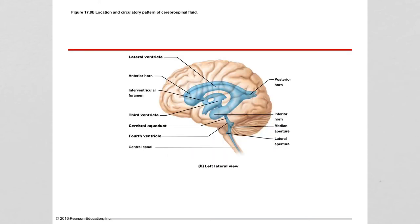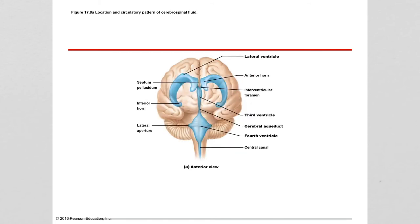Here is a different view of all the ventricles. We have the lateral ventricles, the third ventricle, the cerebral aqueduct leading to the fourth ventricle. You can see how they are oriented in space. Here's another view showing the lateral ventricles clearly, the third ventricle, and the cerebral aqueduct leading to the fourth ventricle.